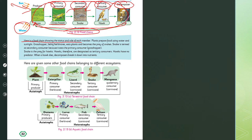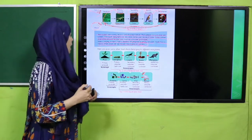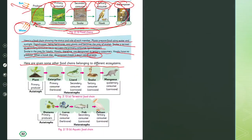Here is the food chain showing the status and role of each member: plants prepare food using water and sunlight. The grasshopper, being a herbivore, eats plants and becomes the prey of snakes. The snake is the secondary consumer because it eats the primary consumer, the grasshopper. The snake is prey for hawks, so hawks are the tertiary consumers. Hawks have no predator; when a hawk dies, decomposers break it down into nutrients, plants grow from the soil, and the energy flow is continuous. Other food chains include: plant → caterpillar (primary consumer) → lizard (secondary) → snake (tertiary) → mongoose (quaternary consumer).